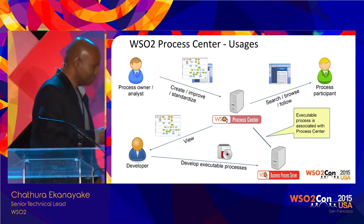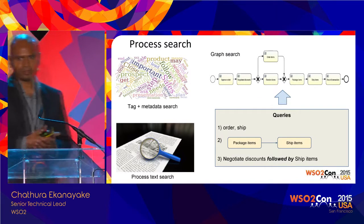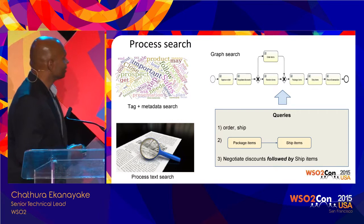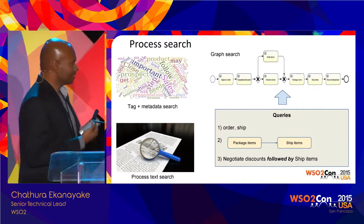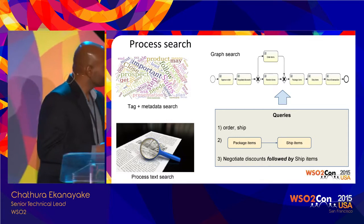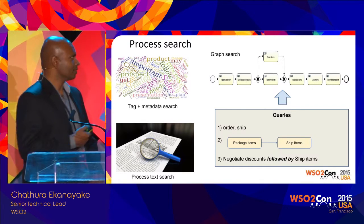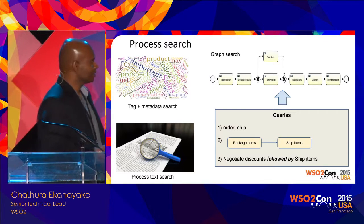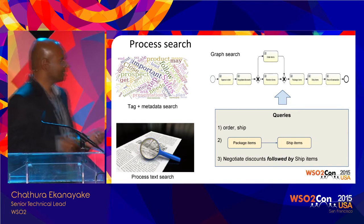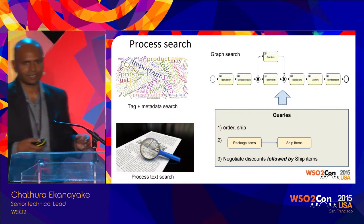What are the things we can do with this scenario? First, we can facilitate process search. We can provide multiple mechanisms: tag and metadata-based search, process text-based search, and graph-based search. Because process models like BPMN or BPEL can be considered as graphs, we can have graph query mechanisms on top of our process centre. For example, we can give a section of a BPMN model and ask the process centre to find all process models containing that section.